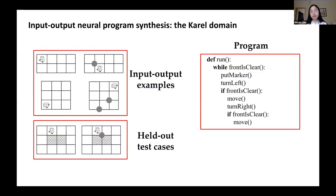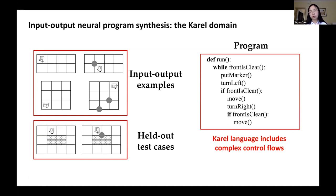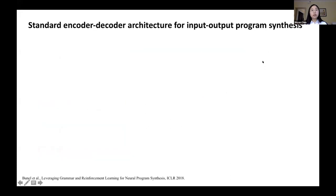As we can see from the CAROL program, this language is not completely sequential. It includes control flow constructs such as loops and conditionals, which increases the complexity of this grammar. Before diving into our approach, let me provide a brief recap of existing neural architectures for input-output program synthesis and see what is missing there.